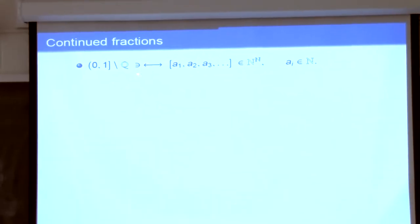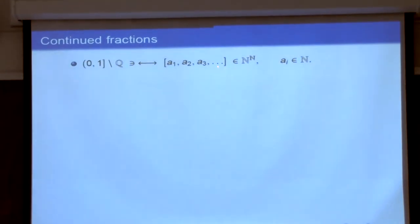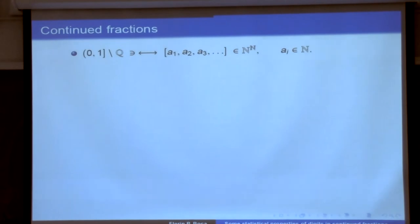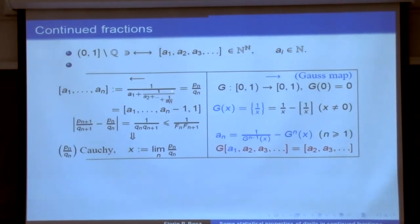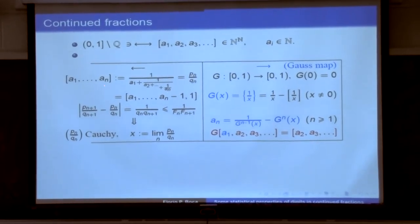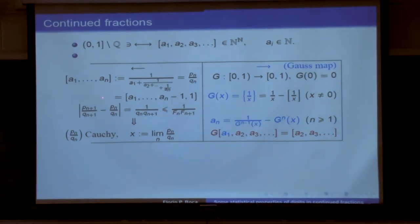There is a one-to-one correspondence between irrational numbers in the interval (0,1) and sequences with entries that are positive integers. In one direction it goes like this: given such a sequence, we truncate it and define these rational numbers. The output is going to be the same as when we subtract one from the last digit and insert an extra one on the last position. So what I want to say is that for rational numbers, the continued fraction expansion is not unique.